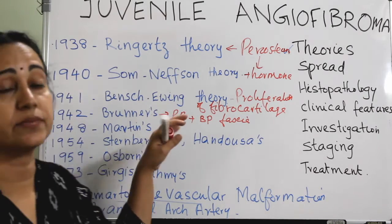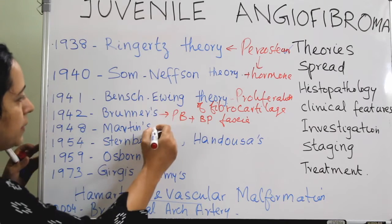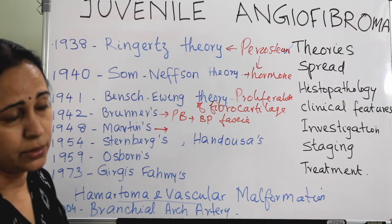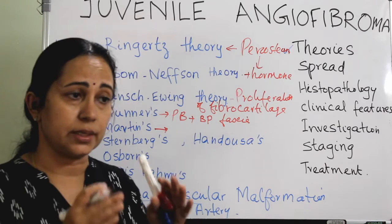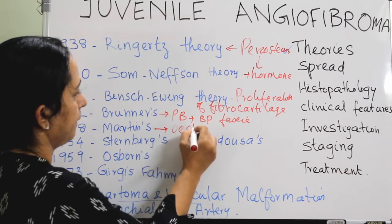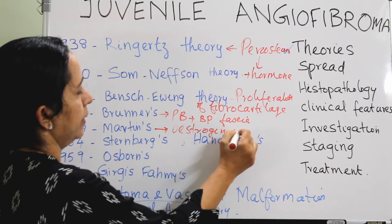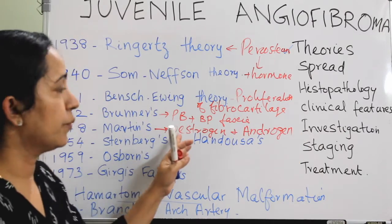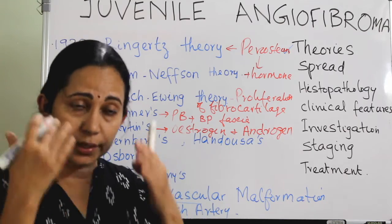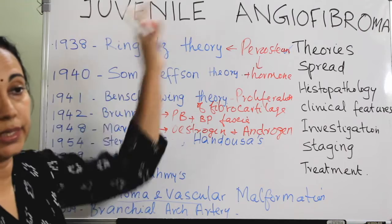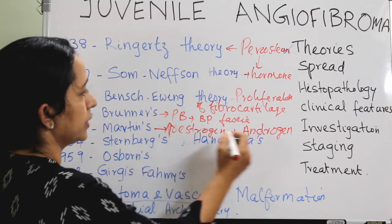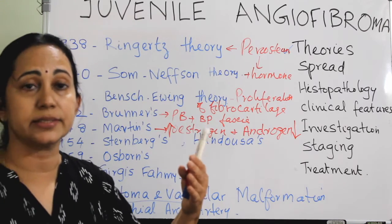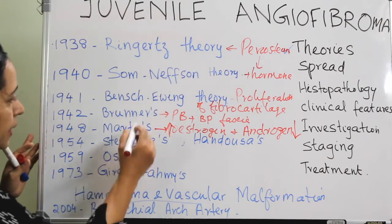Brenner's theory in 1942 tells that JNA arises from a conjoint pharyngobasilar and buccopharyngeal fascia. Regarding Martin's theory, it describes a hormonal imbalance in adolescents, where estrogen and androgen are both acting. When estrogen levels increase and/or androgen levels decrease, this leads to the formation of JNA.